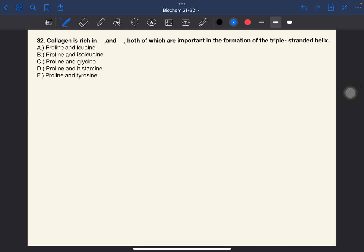Number 32. Collagen is rich in blank and blank, both of which are important in the formation of the triple-stranded helix. The answer to this one is C, proline and glycine.